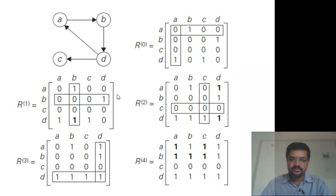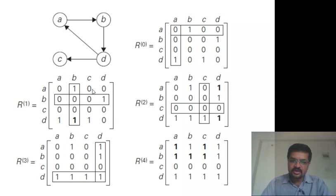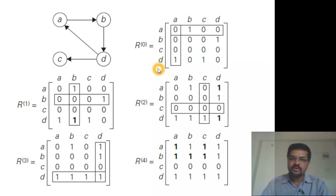Let's see an example. Here is the digraph we saw earlier, and this is the adjacency matrix, which we call R0. To get R1 from R0, we now have the option of using A as an intermediate vertex. All the 1s are carried forward, and then looking at the column and row, there is a 1 at D-to-A and a 1 at A-to-B. That means there is a path from D to A and a path from A to B. So with A as an intermediate vertex, we can have a path from D to B — that's why this entry becomes 1.